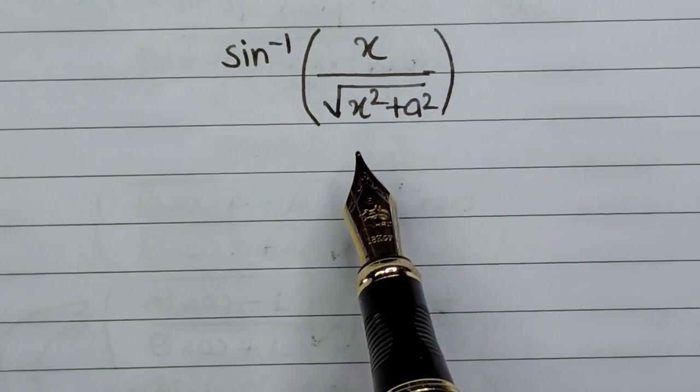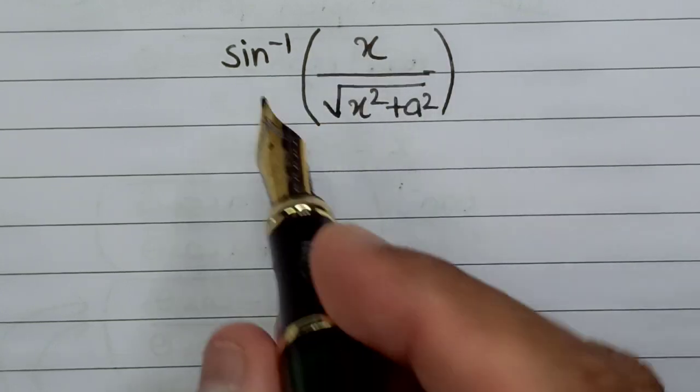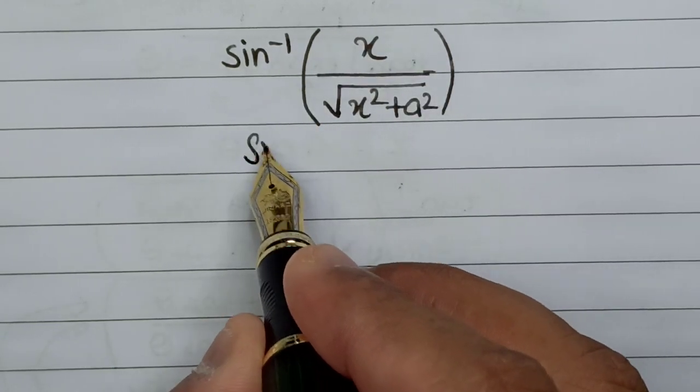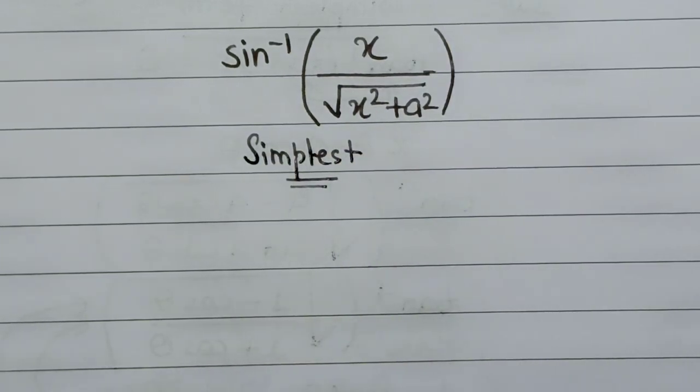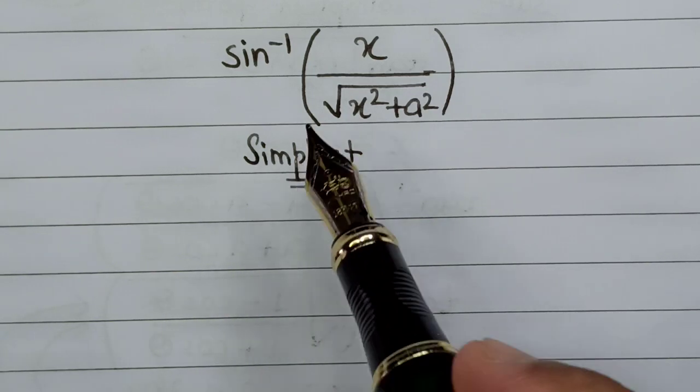The question is that we have to reduce this particular problem in the simplest form possible. In order to do that, we first have to figure out a way where this sine inverse can be cancelled out using the formulas of trigonometry.